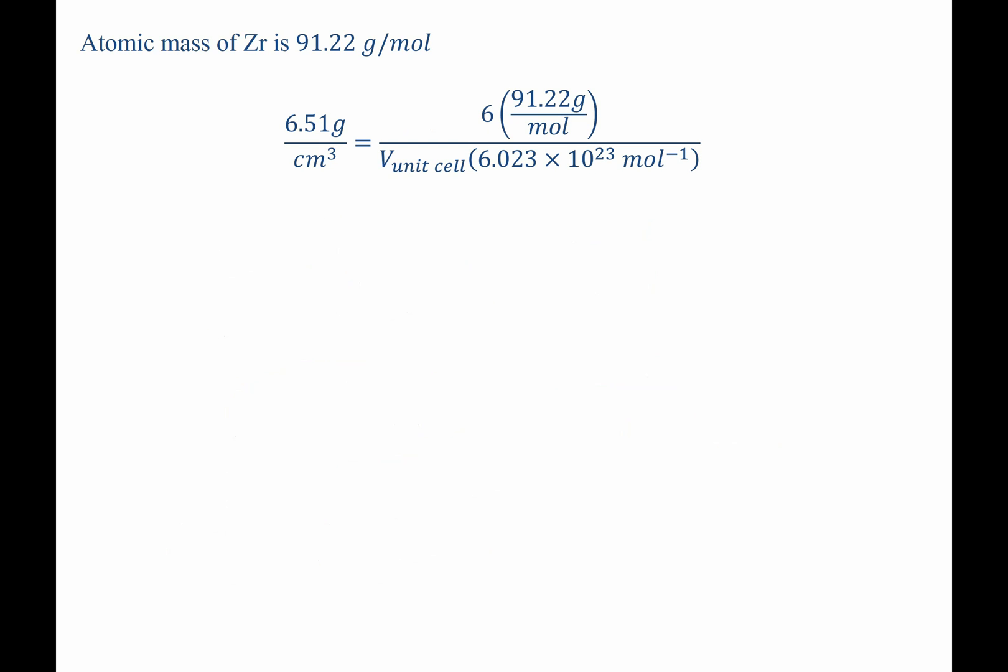So now that we know z, we have everything in this equation to solve for the volume of the unit cell. And we can do so, and we get that it is equal to 1.395 times 10 to the negative 22 cubic centimeters.